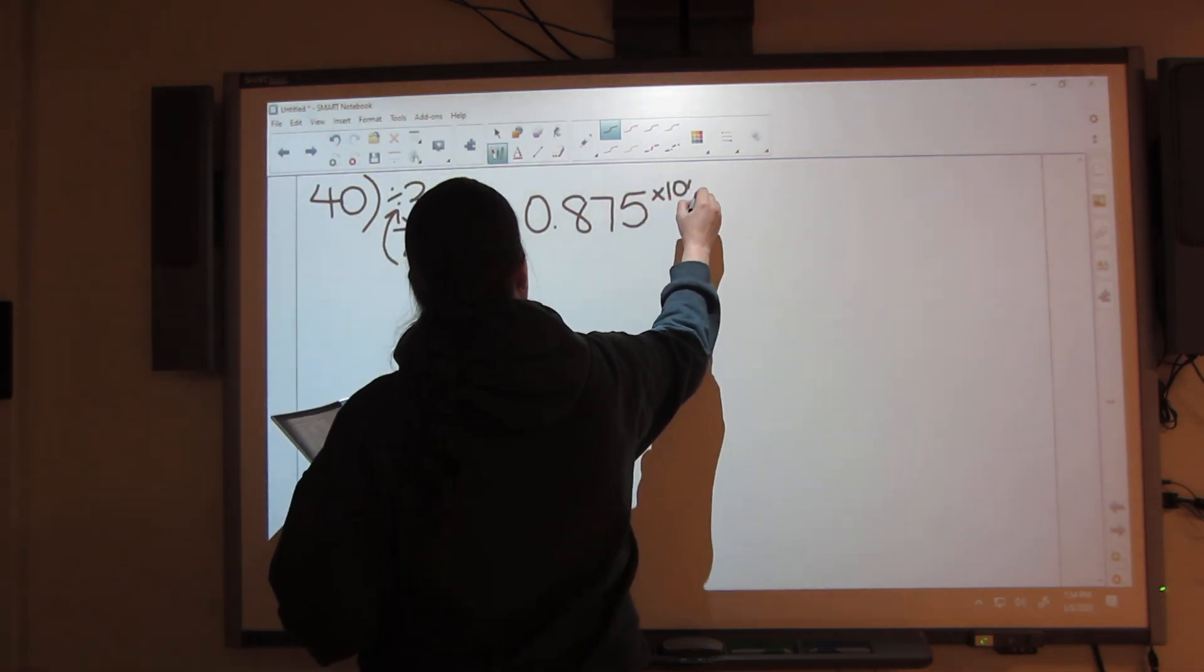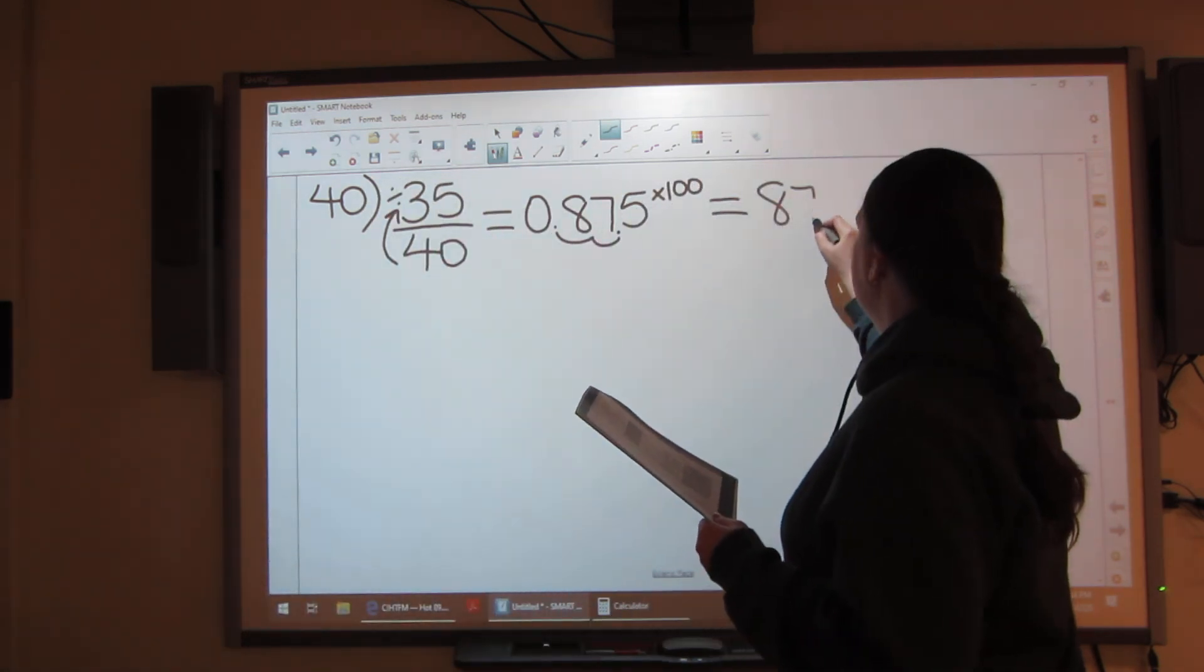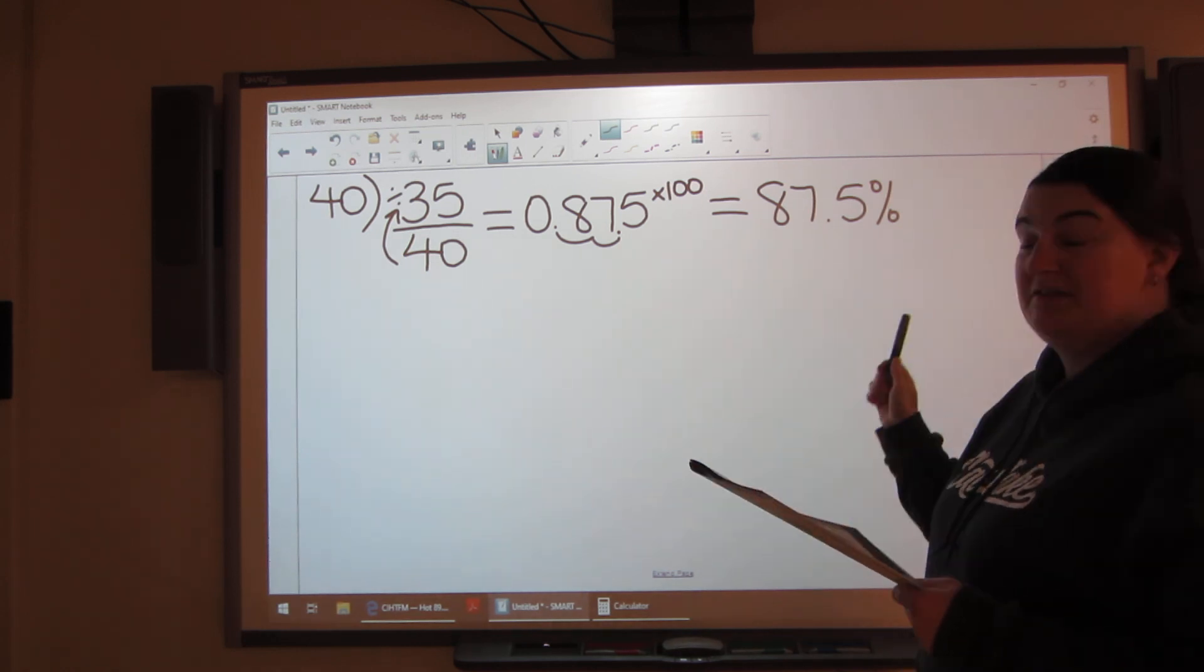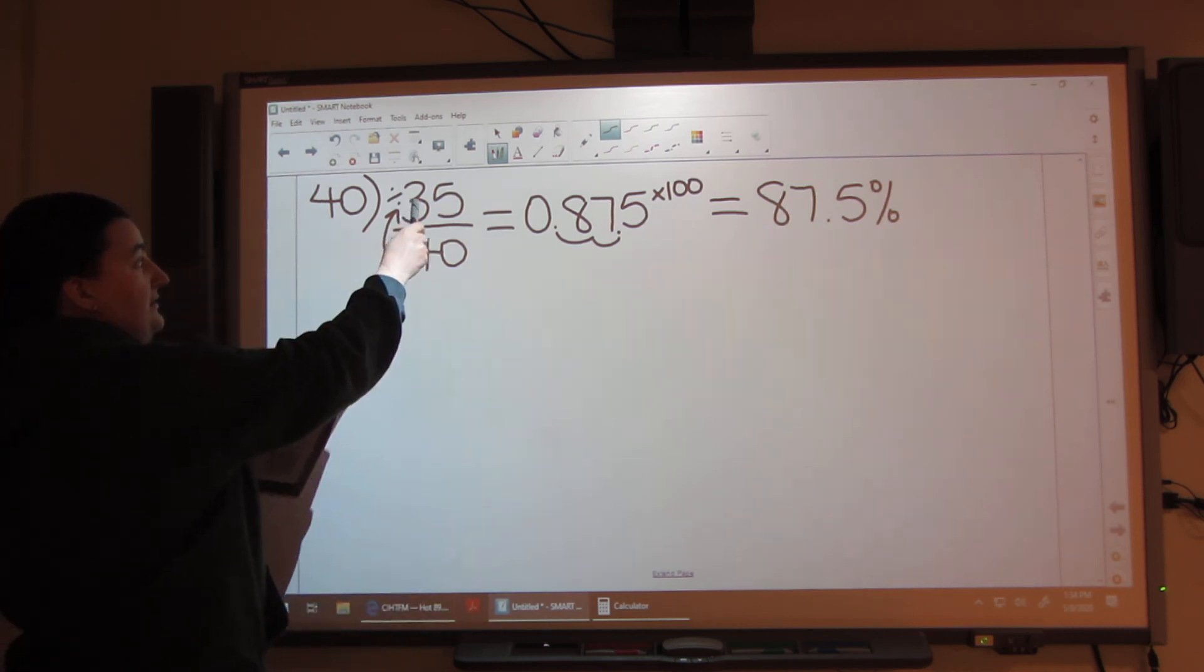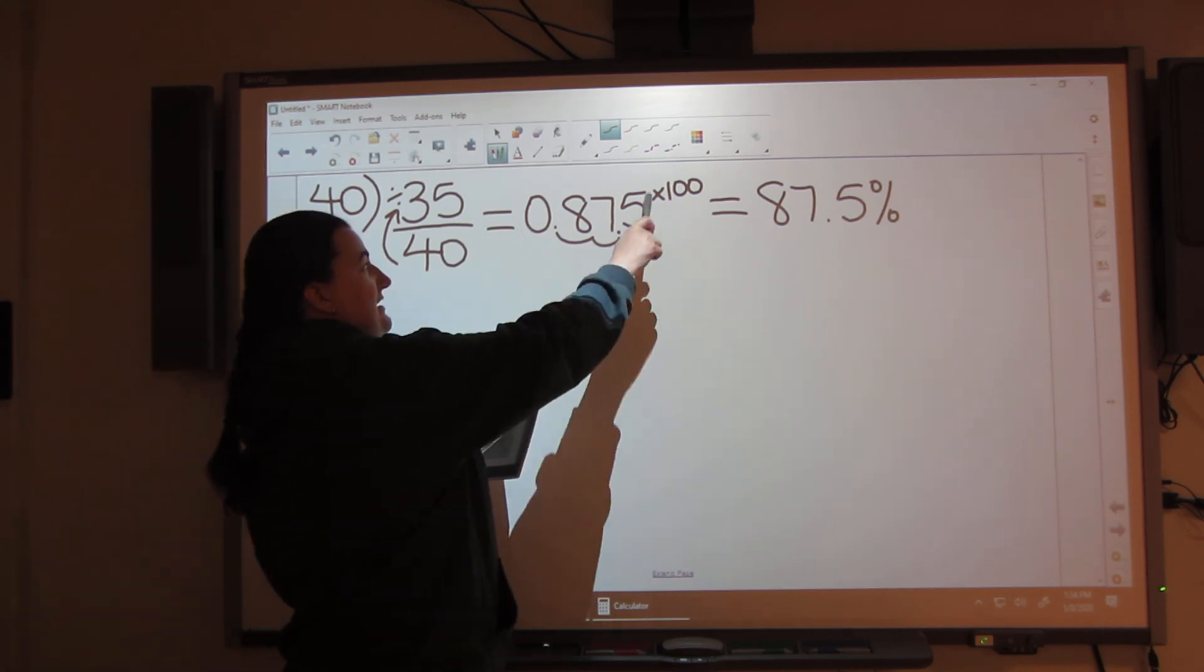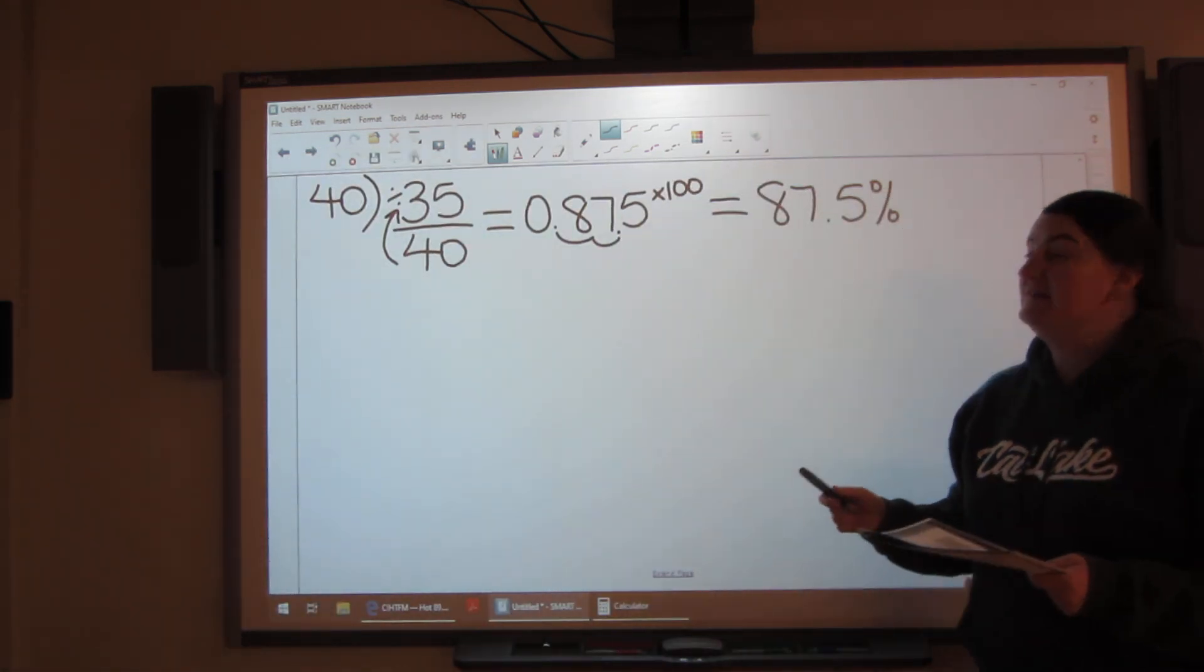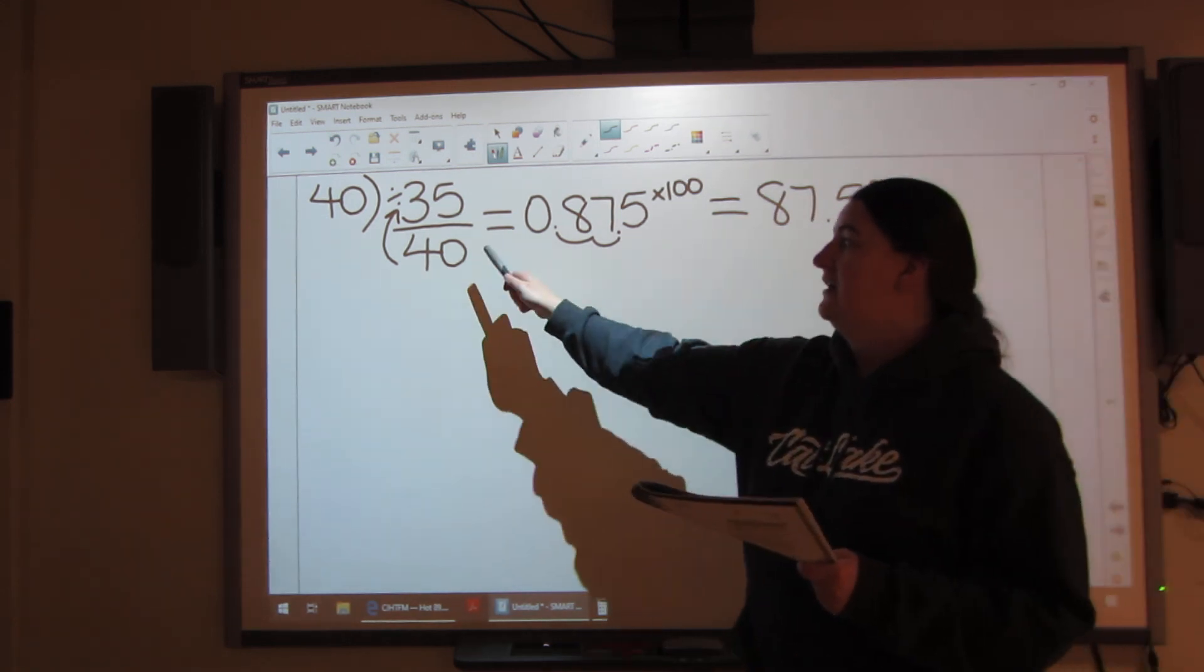So 35 divided by 40 equals 0.875, which is perfect. So 0.875 times 100 equals 87.5 percent. So 40 all the way to 45, this is how you're going to have to figure it out. You're going to put the numbers as a fraction. You're going to divide the bottom number into the top number. You're going to write down the decimal answer. You're going to times by 100 to get the percent.